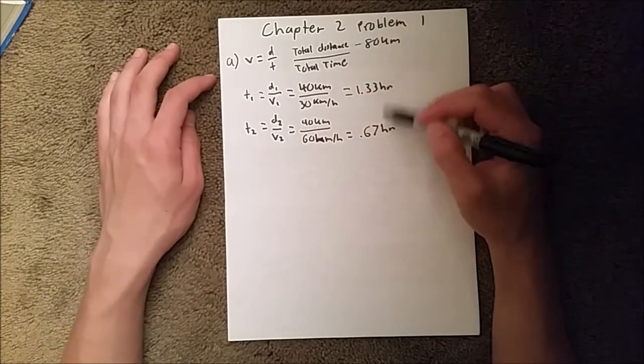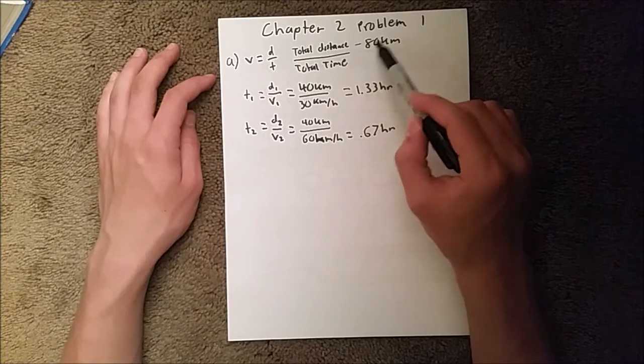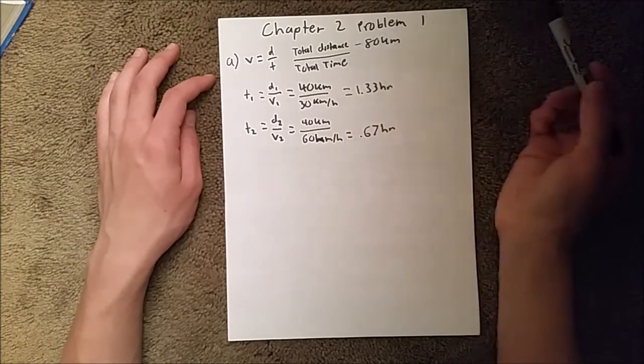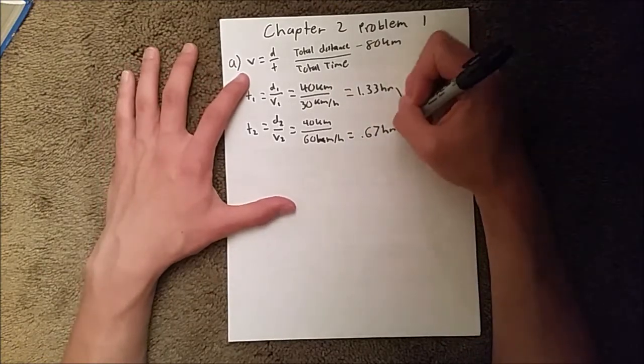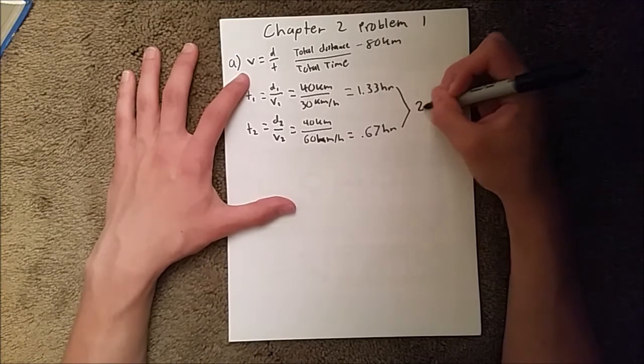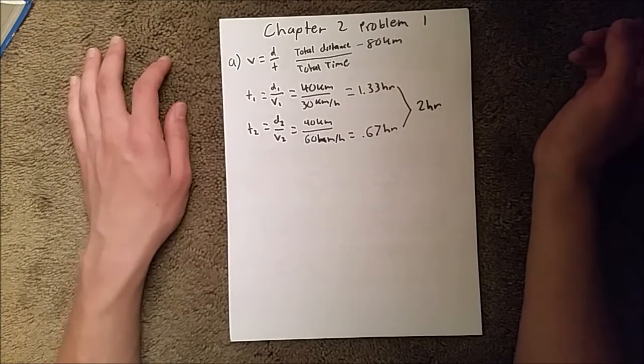And so now we have our time, and we know our total distance, and so we need to find total time, which is just these added together, which is 2 hours.